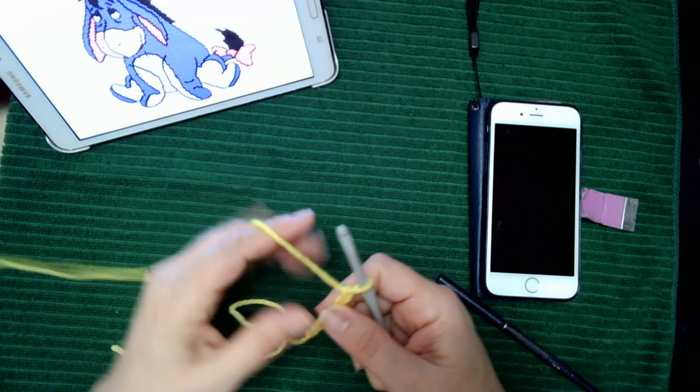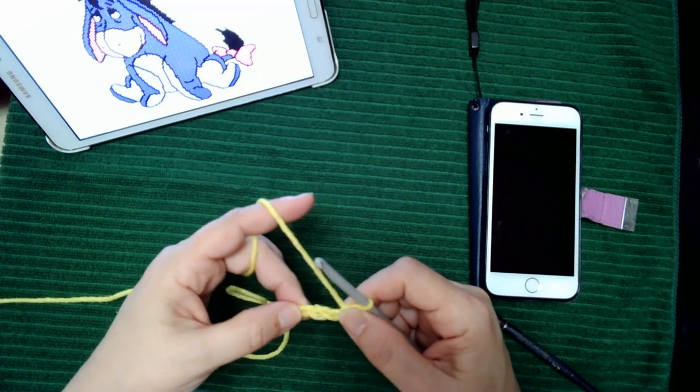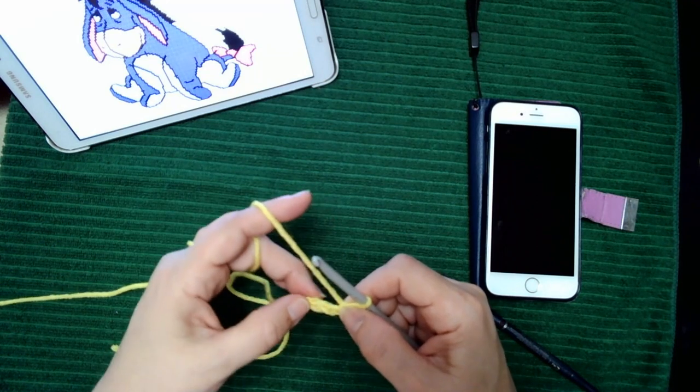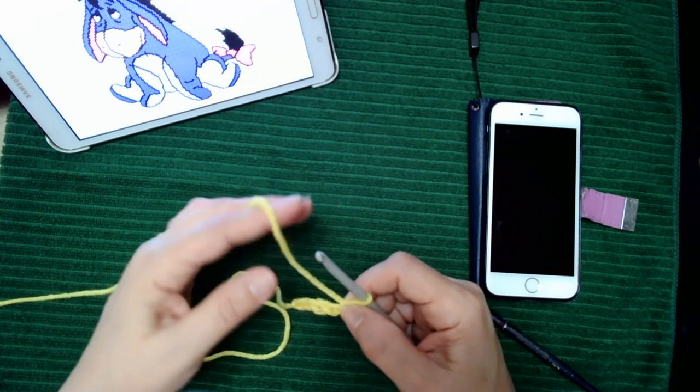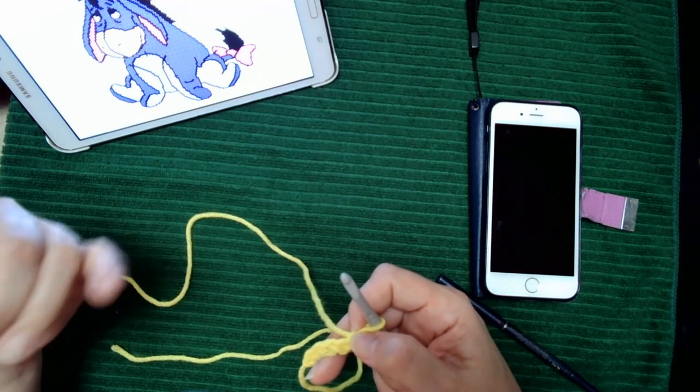I'm going to be using the 5-3-2 method which is a chain five, make three half double crochets, and then a chain two to do the next block.